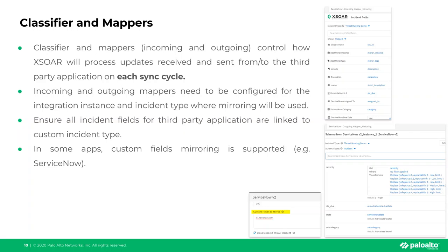Both classifiers and mappers are of particular importance with integrations that support mirroring, since both processes occur on every sync cycle from the third-party application. This is very important to note — by default the sync cycle is one minute for most integrations. For bidirectional mirroring, we have the distinction of an incoming mapper and an outgoing mapper.